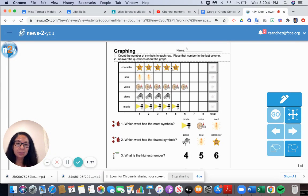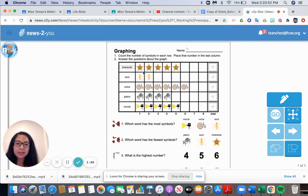We need to count the symbols in each row and then answer the questions about the graph. Let's see what the pictures are. Character - this is a character, like a character from a movie. The star with the face in it is a character from a movie. The next symbol is soul. That's a little bit harder to explain, but a soul is something that people have, like their spirit. This is a picture of somebody's soul or spirit.